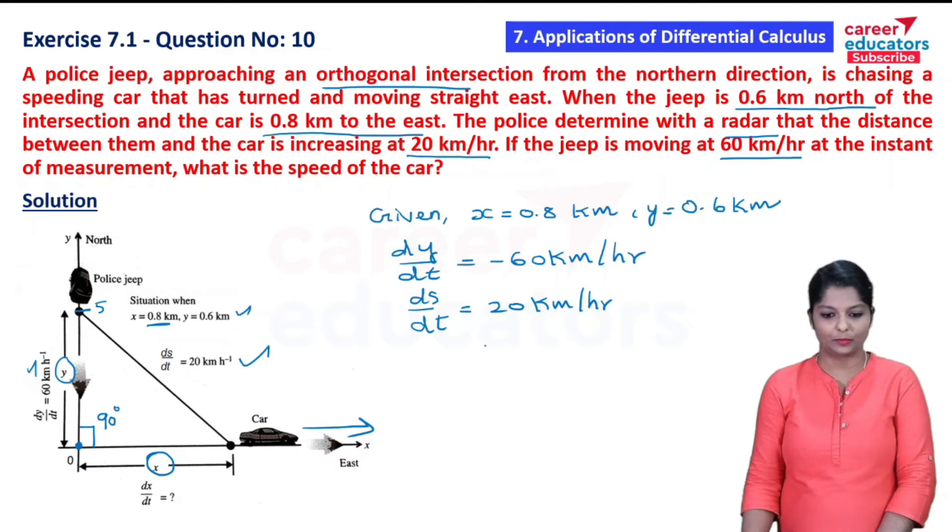Now draw the diagram as a right angle triangle. Label the points A, B, C with sides X, Y, and S. In this triangle, we will apply the Pythagorean theorem.